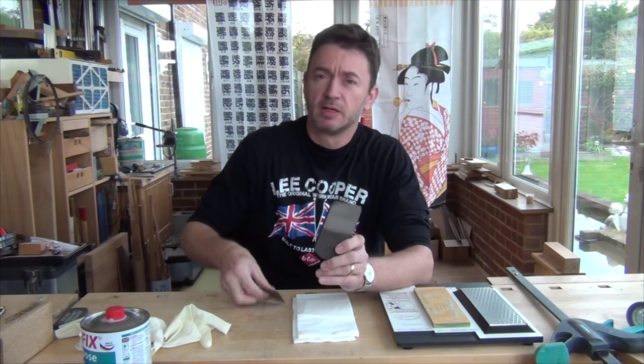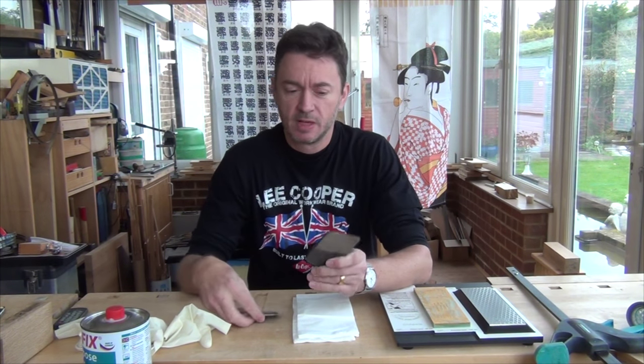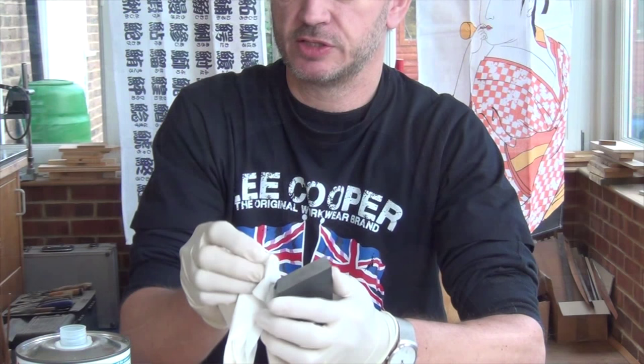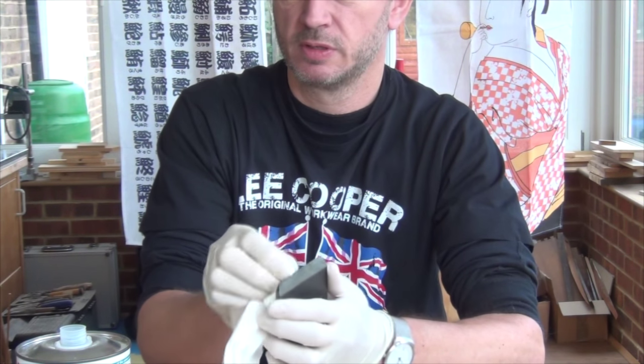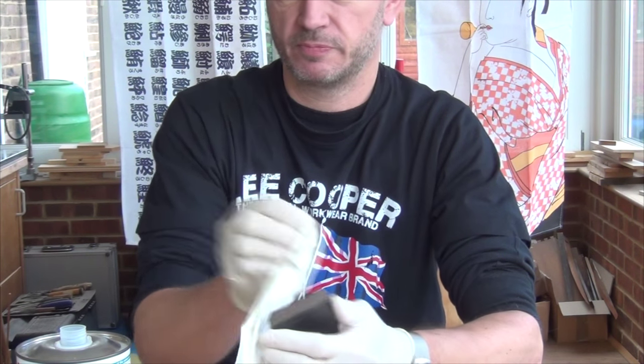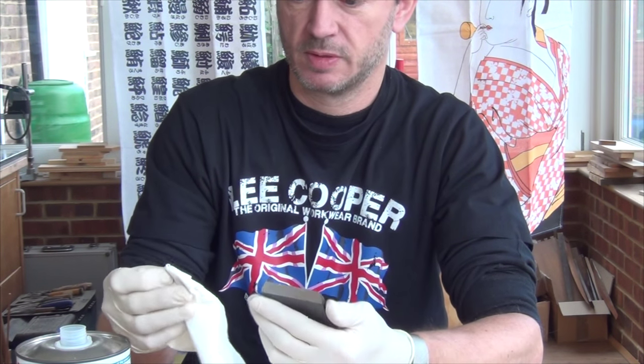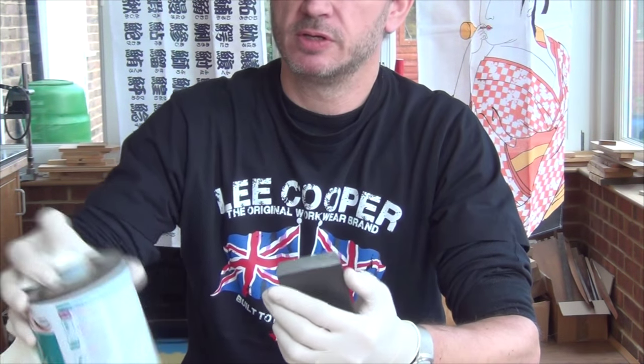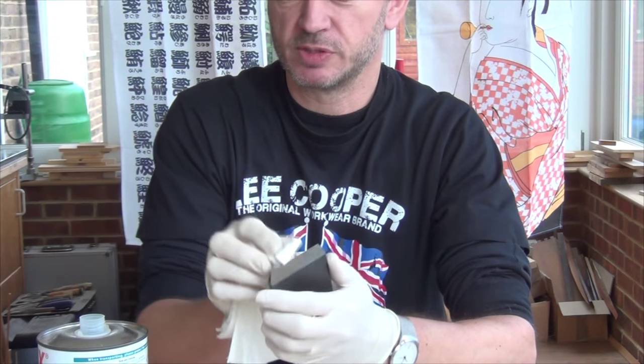Now here's the iron and the chip breaker. They both come with a little bit of lacquer or something on them to prevent rusting. So the first job is to clean those off as I would normally do. This combination thinner works very well, gets all that rubbish off. And then we can go on to preparing it on some stones.